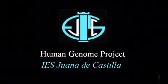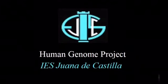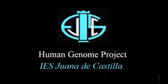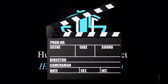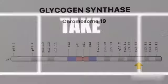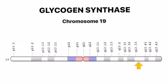Welcome, I hope you enjoy the video. Glycogen synthase is located in chromosome 19 at position 13.33.